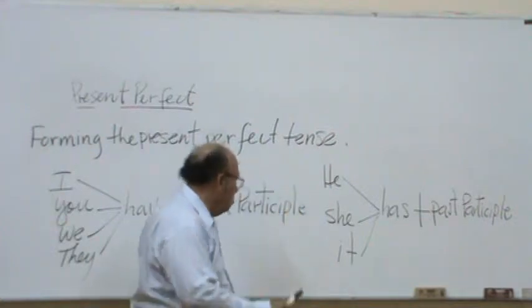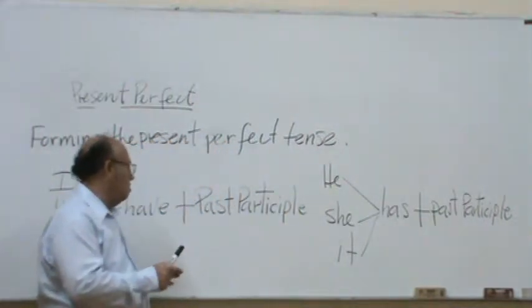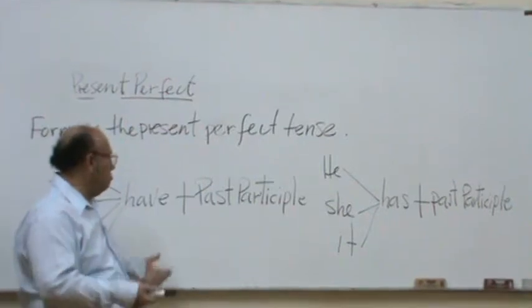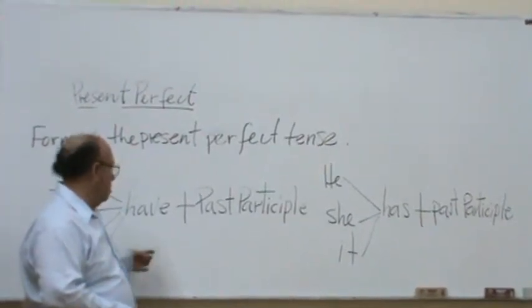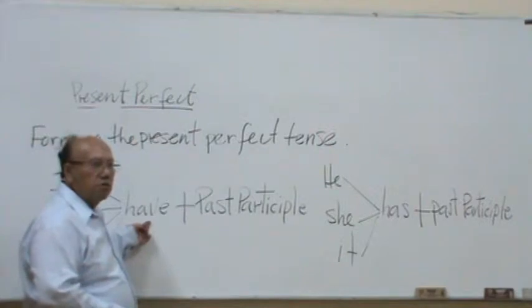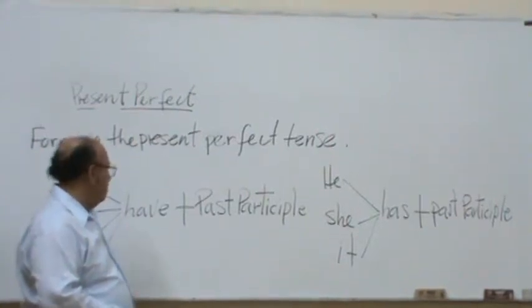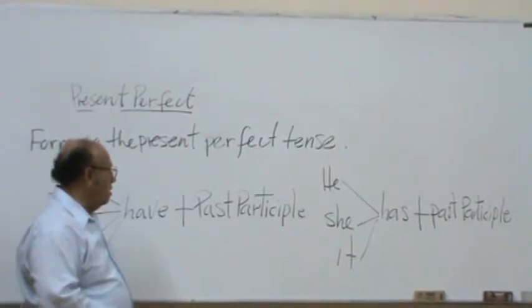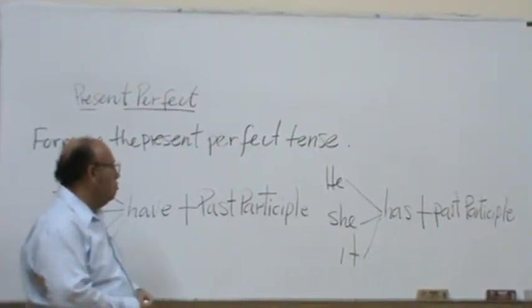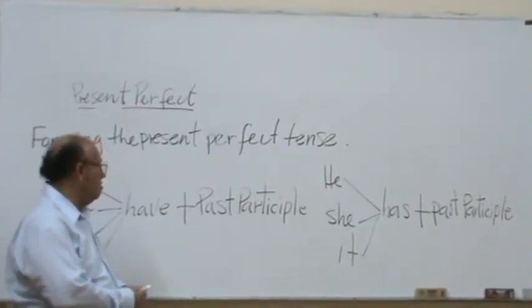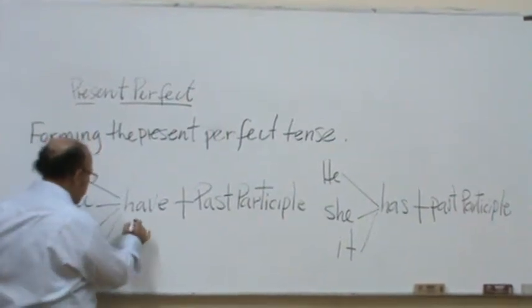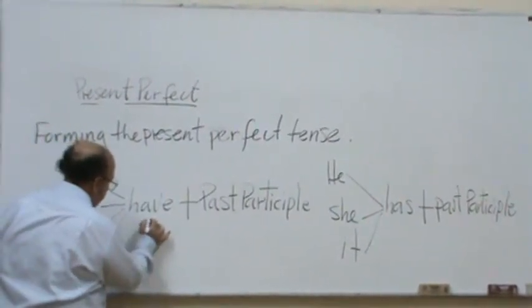Also, we can contract, we can make a contraction with the verb to be. For example, have and has, we can contract it using apostrophe v, like this,